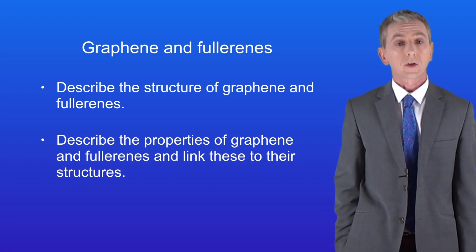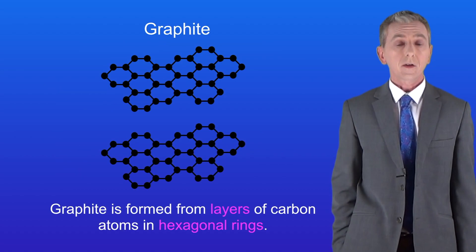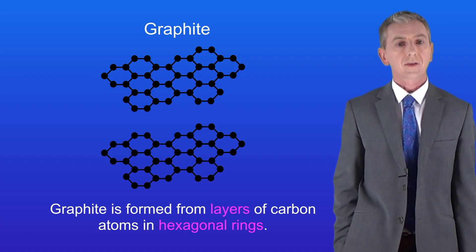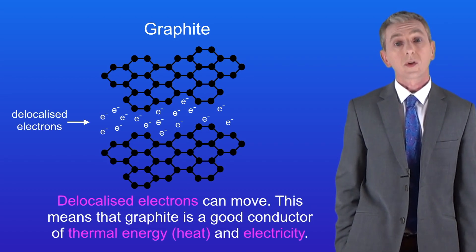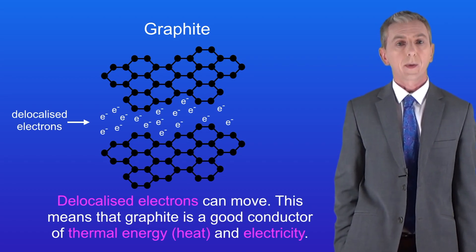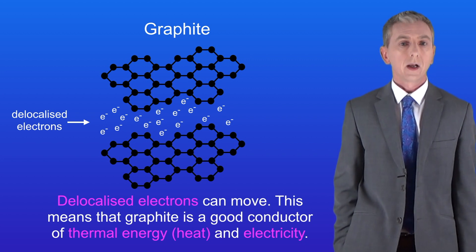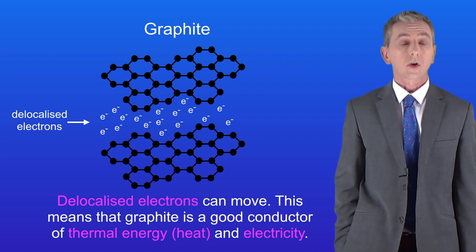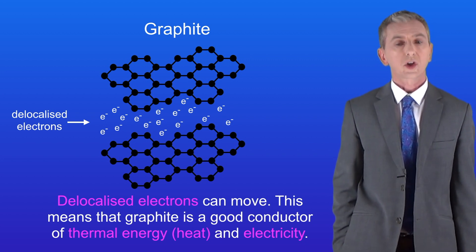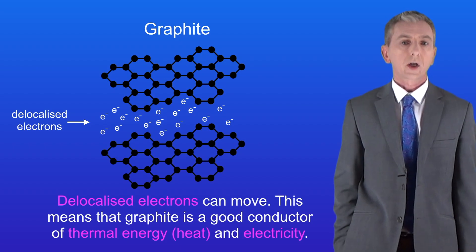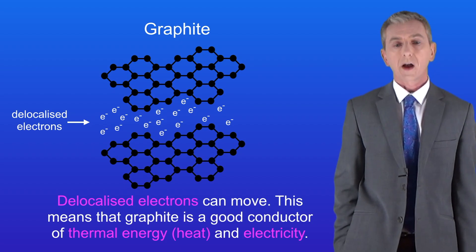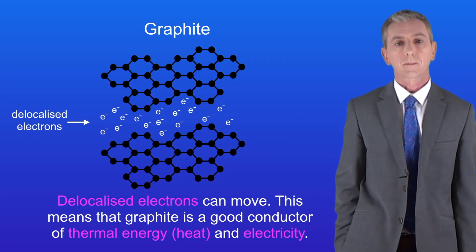In the last video we looked at graphite. Graphite is formed from layers of carbon atoms in hexagonal rings. Each carbon atom has an unbonded electron and these electrons are delocalised, which means they can move. Because of this, graphite is a good conductor of thermal energy and electricity.